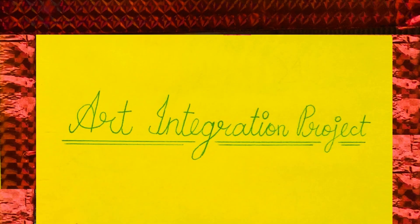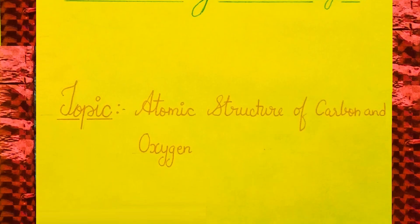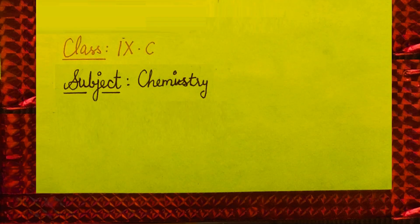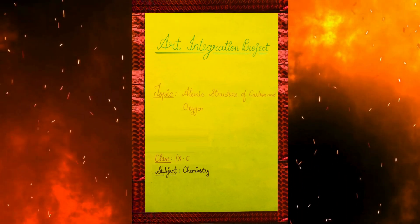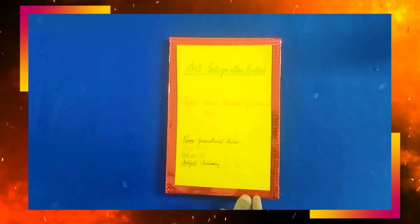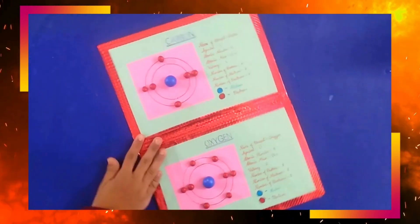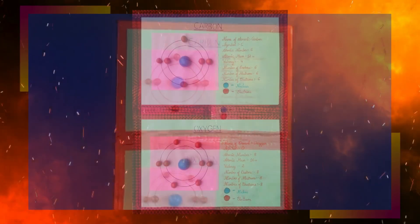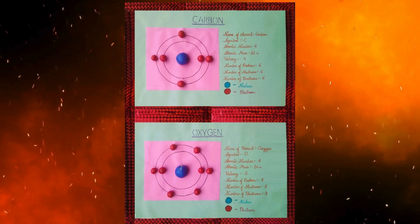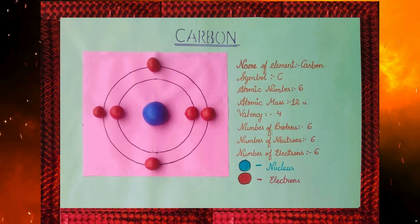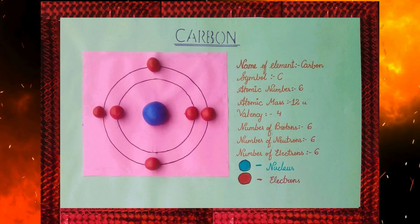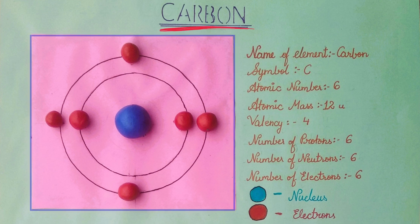Art Integration Project. Topic: Atomic Structure of Carbon and Oxygen. Subject: Chemistry. This figure depicts the atomic structure of Carbon.